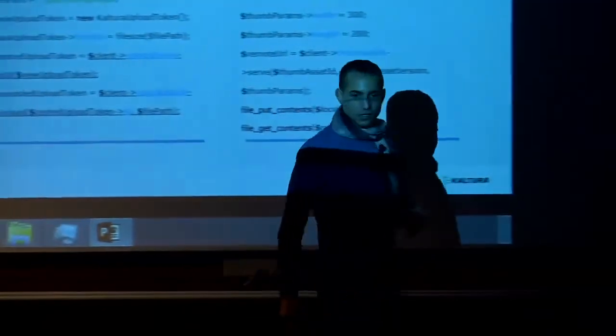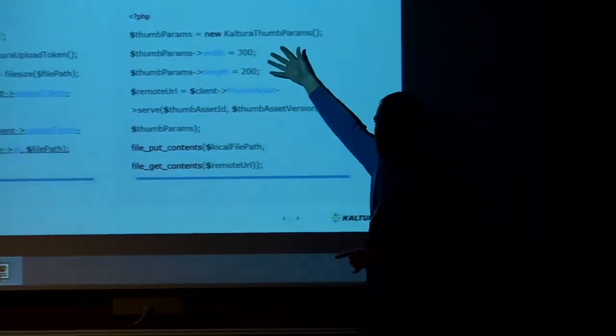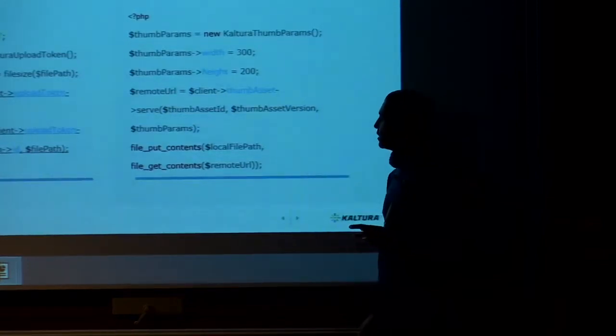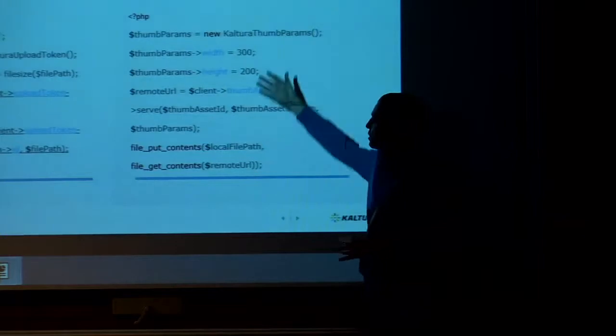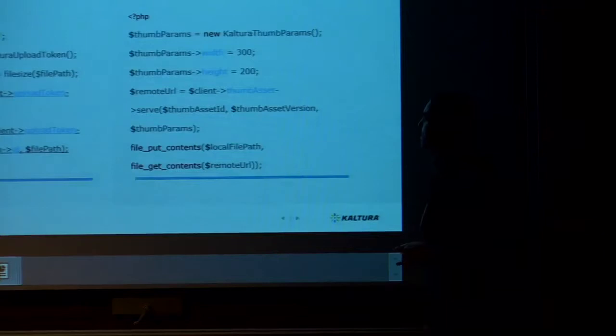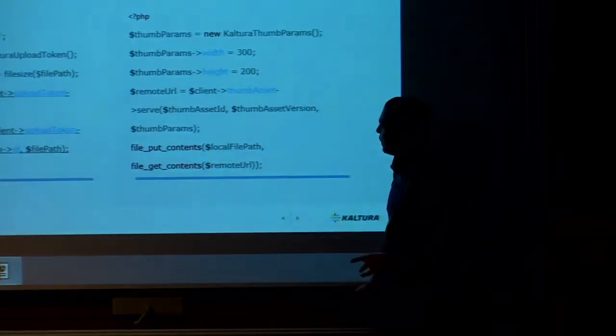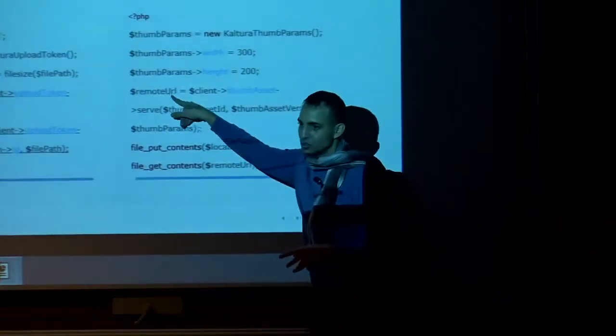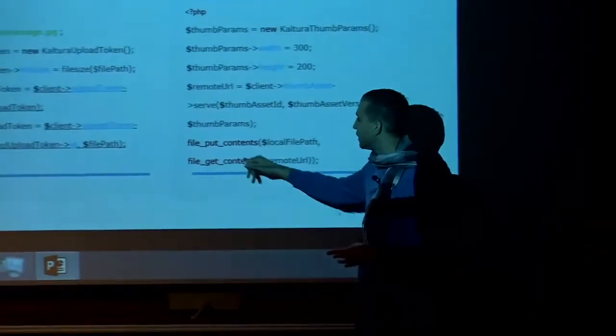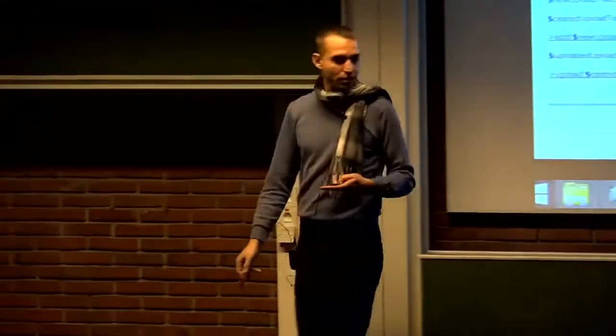On the other hand, serve action. You can send complex data structure to the server. Our Kaltura thumb params support scaling and trimming and background and many different parameters. I just chose two: width and height, which are quite standard in this case. I just called the serve action with the complex data structure. What I get in return is a remote URL. The URL is the URL that I can use to get the content later. In this case, I just downloaded the file and saved it to the disk. But I could do anything else with that URL.